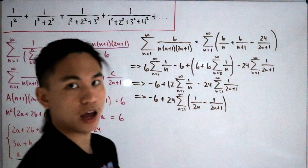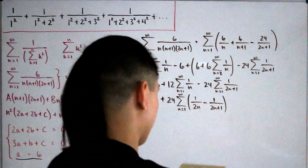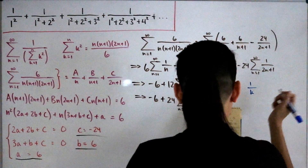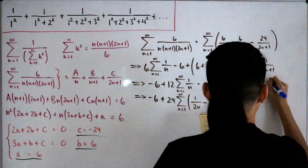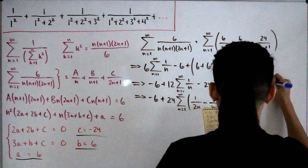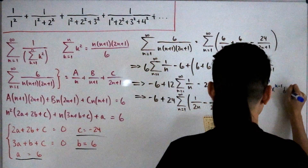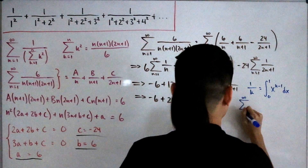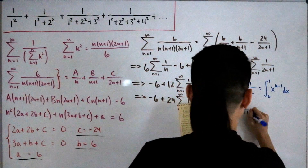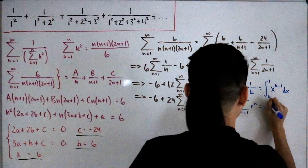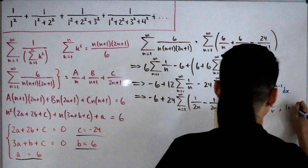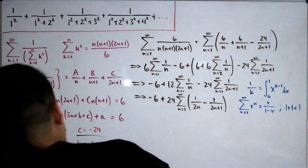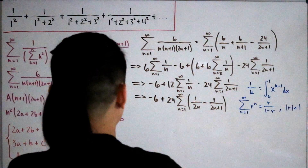We use two key facts: first, 1/k = ∫₀¹ x^(k−1) dx; second, the geometric series Σ(n=1 to ∞) of rⁿ = r/(1−r) for |r| < 1. Using these, we can convert our summation into integral form.